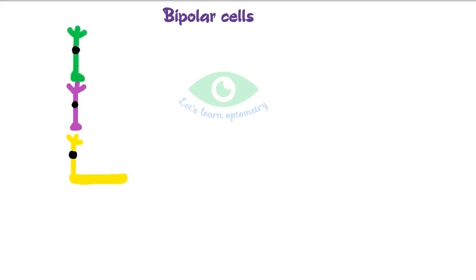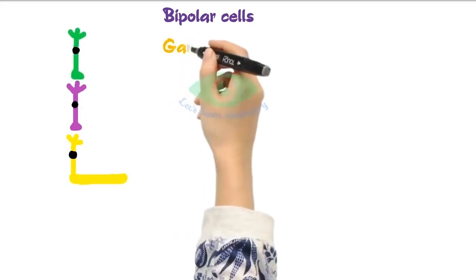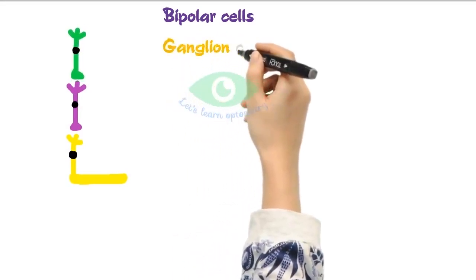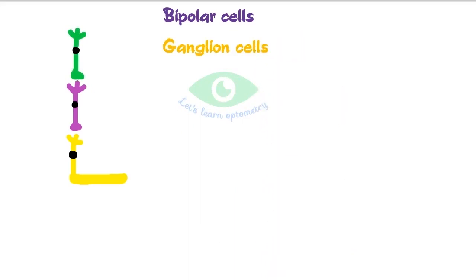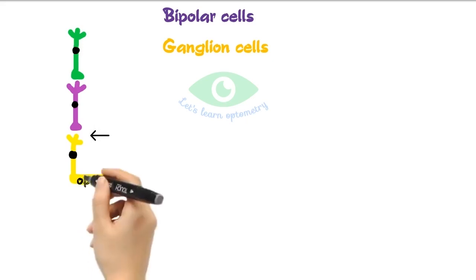Ganglion cells are responsible for image formation, circadian rhythm, and regulation of pupil size. 20 types of ganglion cells have been identified. The dendrites of ganglion cells connect with the axons of bipolar cells, and the axons of ganglion cells join together to form the optic nerve.